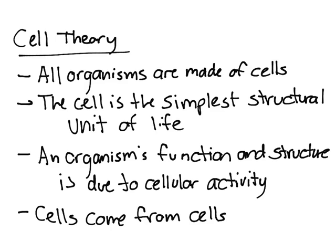This theory was based on many observations and experiments, and this is the modern cell theory. To summarize: the modern cell theory states that all organisms are made up of cells or cell products, the cell is the simplest unit of life, an organism's structure and function are due to cellular activity, and cells can only be made from pre-existing cells — they cannot miraculously appear.